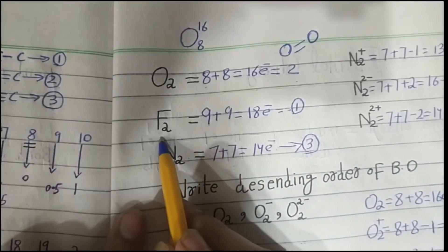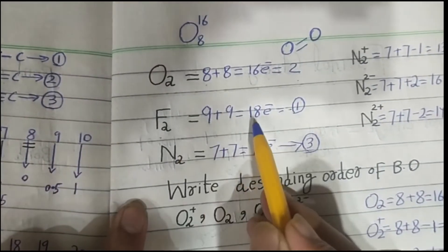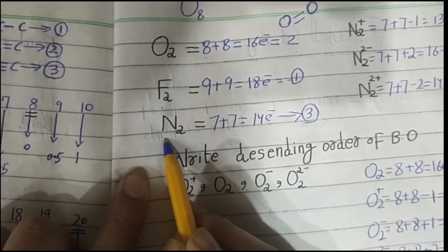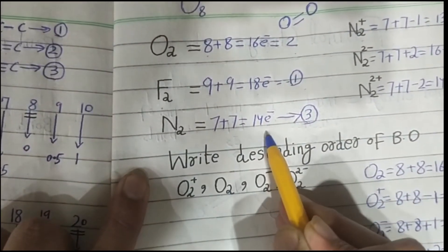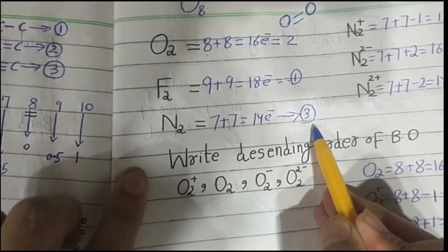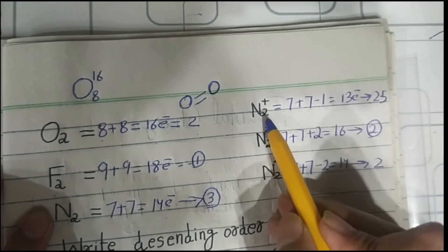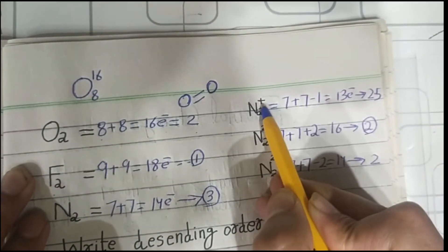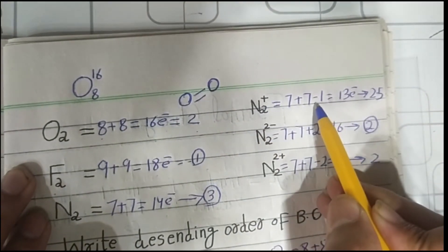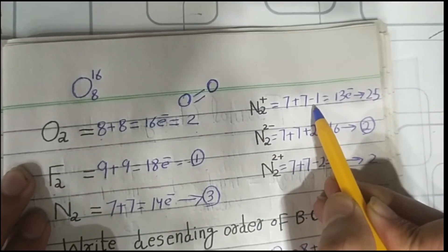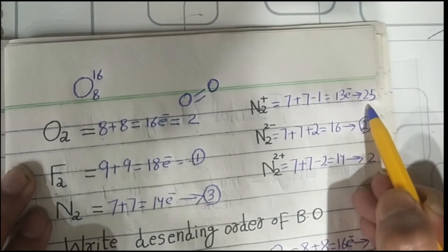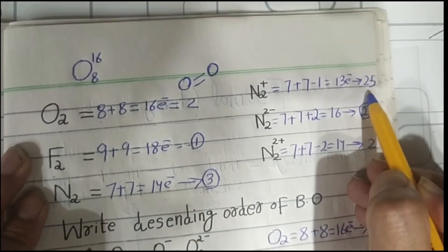Fluorine (F2) contains 18 electrons and has one bond order. Nitrogen (N2) contains 14 electrons and has three bond order. For N2 with a minus one charge: 7 plus 7 plus one extra electron gives 15 electrons, which contains 2.5 bond order.